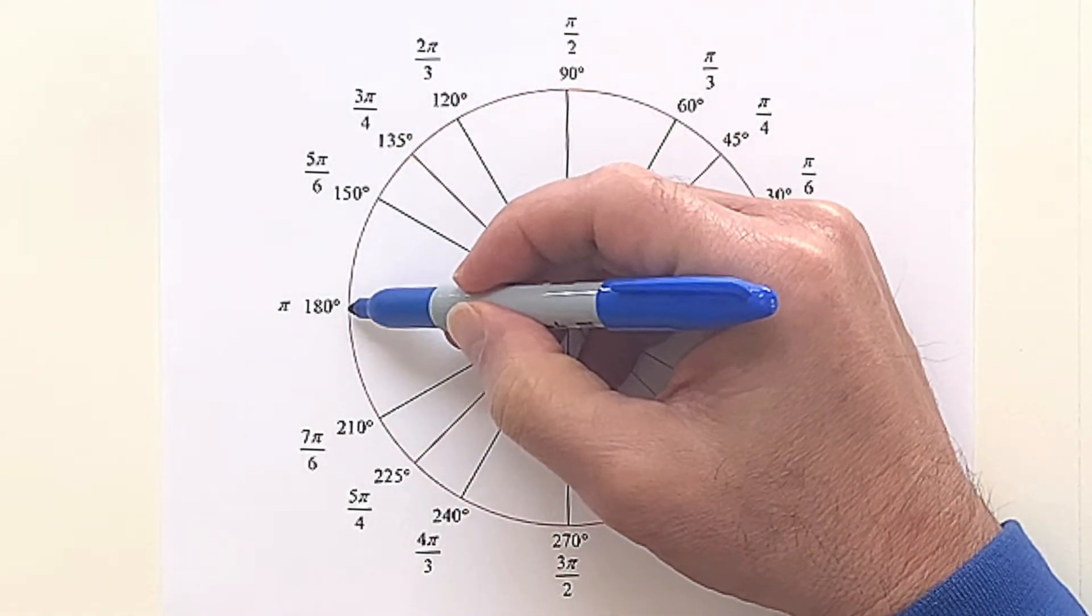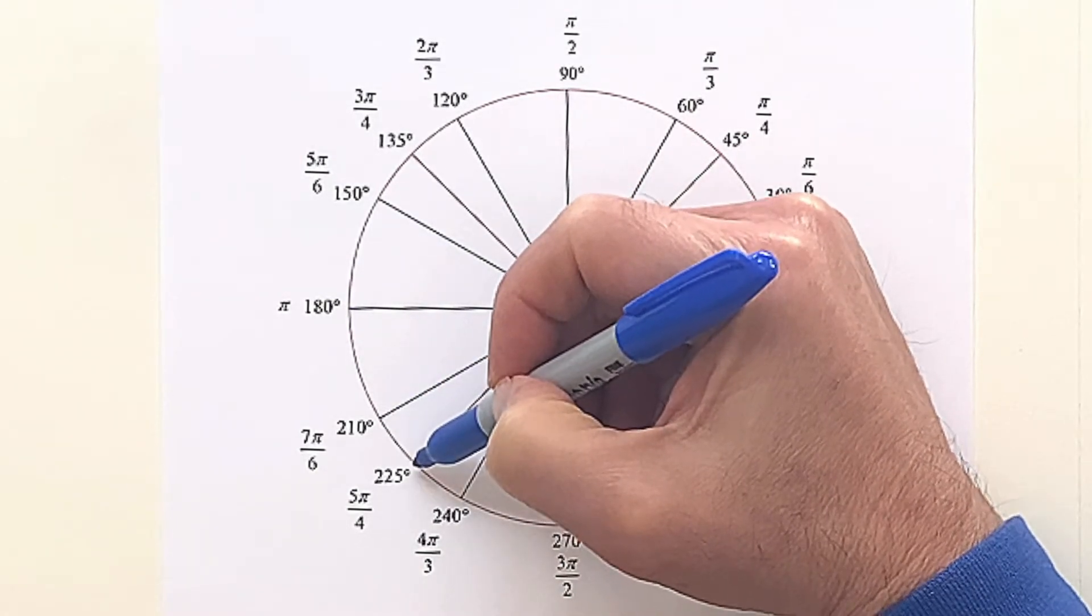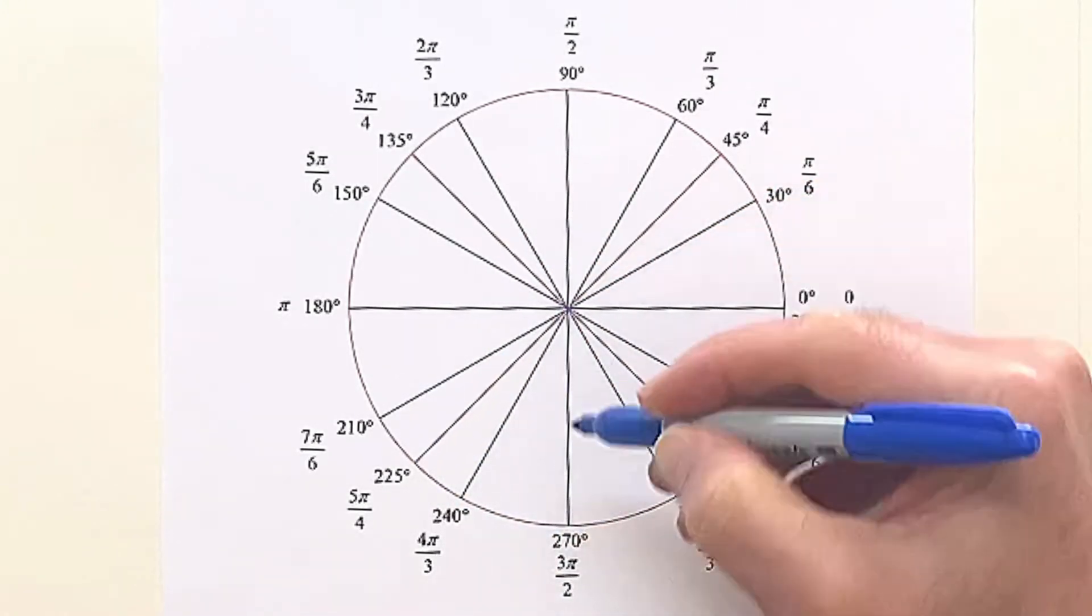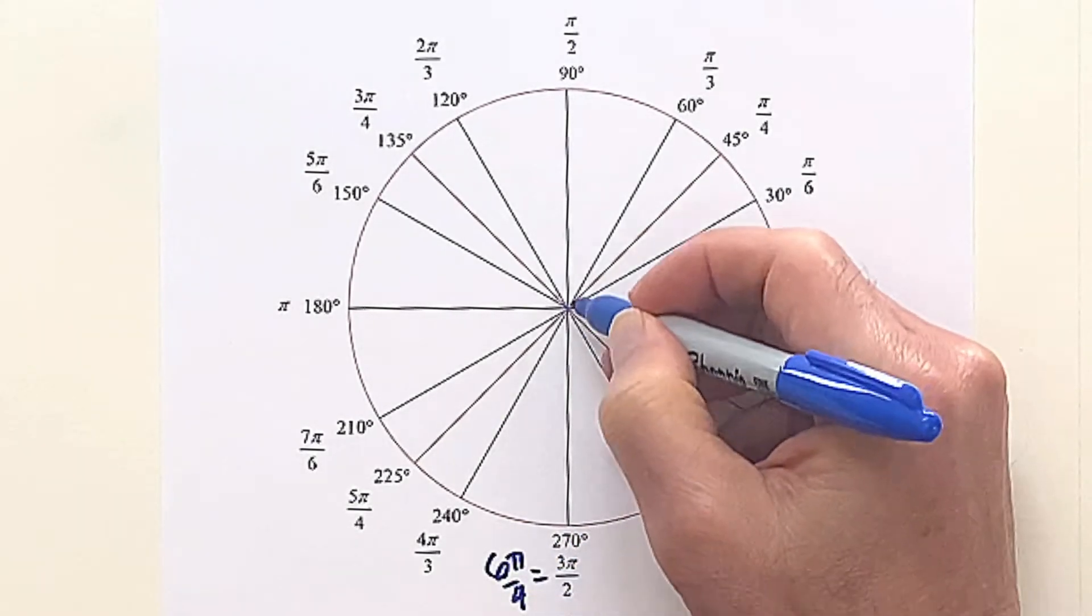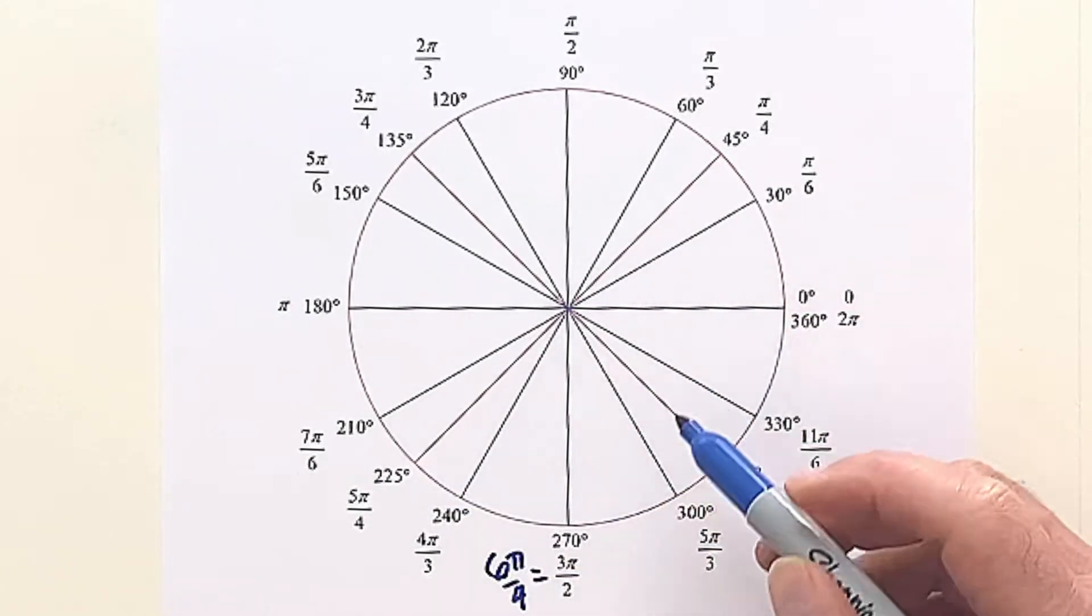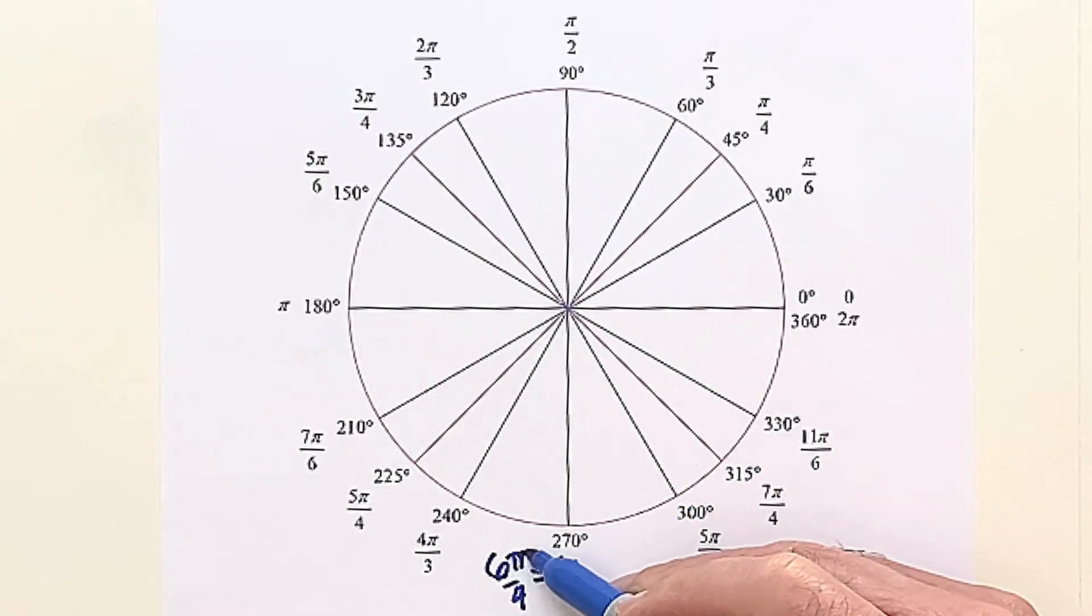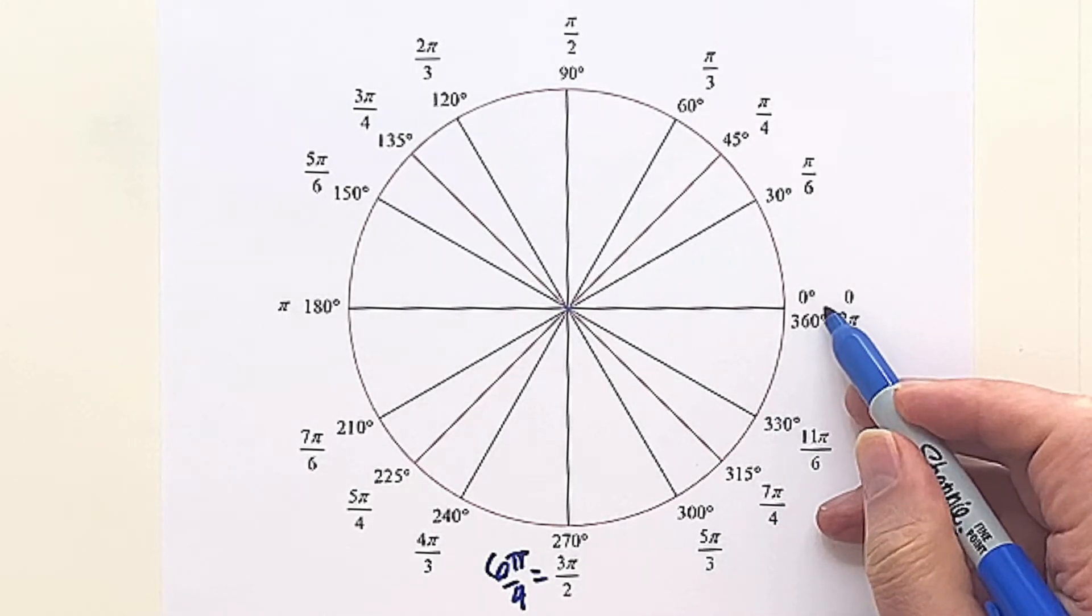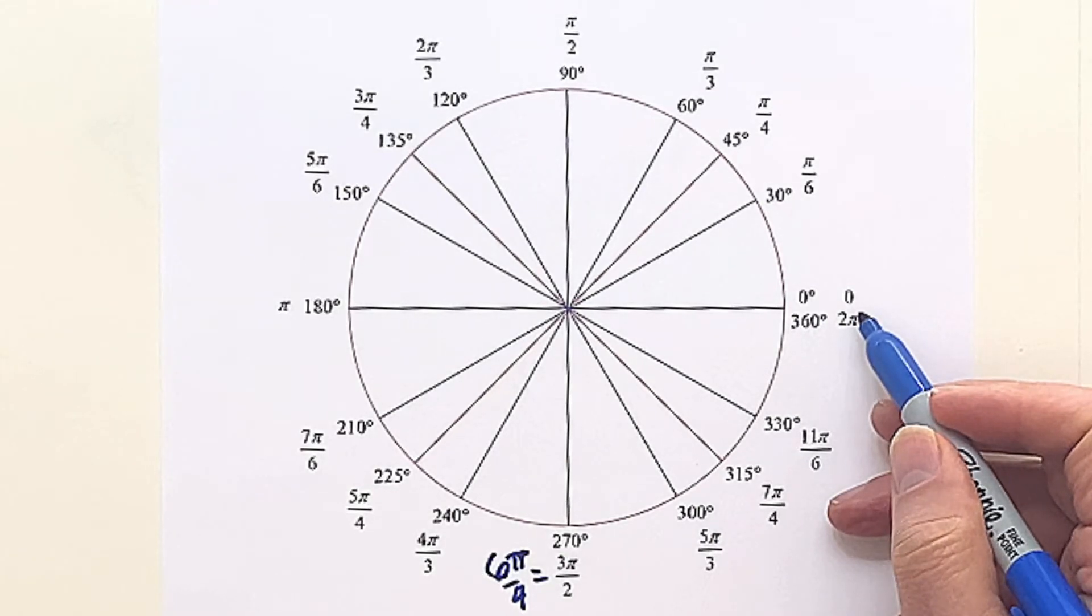Then if you add 45 again, you get 225, that's 5 fourths. Add another 45, takes you to 6 fourths pi, reduces to 3 halves pi, and that's 270, adding 45 again. Add 45 to 270, get 315, that's 7 fourths pi. And then if we add 45 again, we get back to go, to home, and that's 8 fourths is going to be 2 pi.